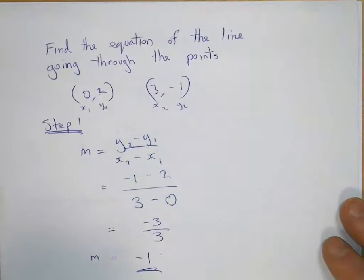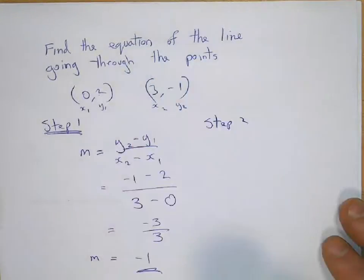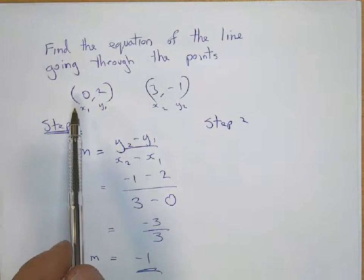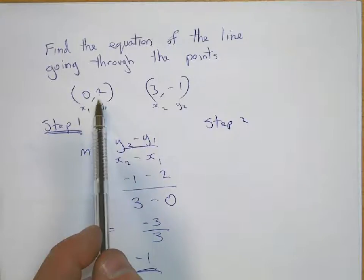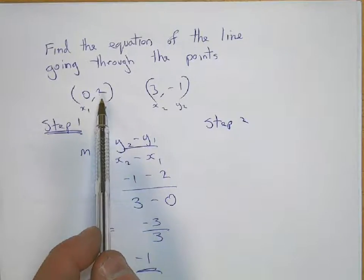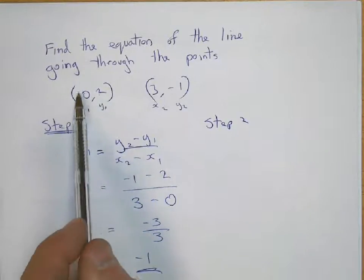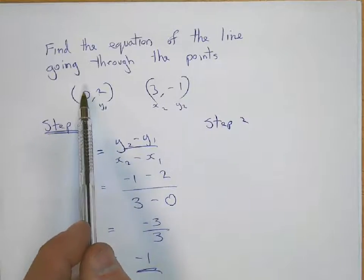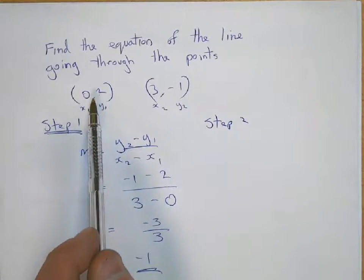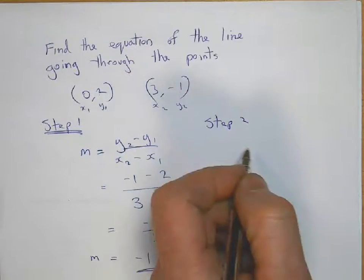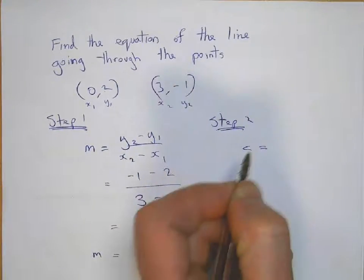Step two, we want to work out the y-intercept. Now, in this case, the y-intercept is easy because this point here lies on the y-axis. And we know that because the x-coordinate is zero. If that was not zero, it would not lie on the y-axis. So we know that the y-intercept is going to be two.